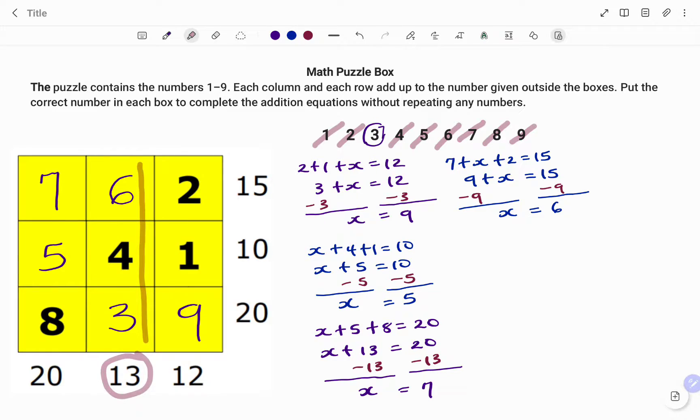If I add the column in the middle, I should have 6 plus 4 plus 3, and that will give us 6 plus 4 is 10, 10 plus 3 is 13, as it should.